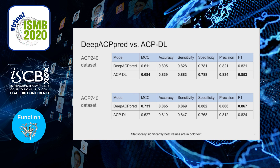When comparing our model with ACPDL, we found that we had inferior results when testing with the smaller ACP240 dataset. In contrast, when testing with the ACP740 dataset, we had statistically significantly better results across the board.